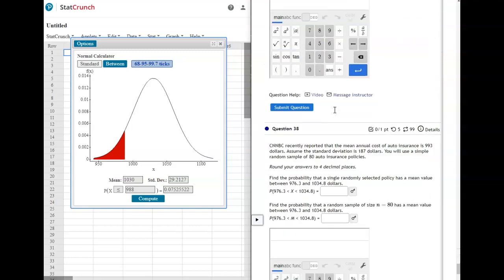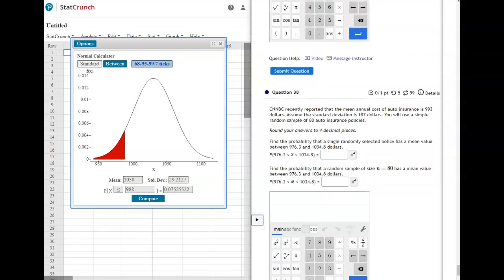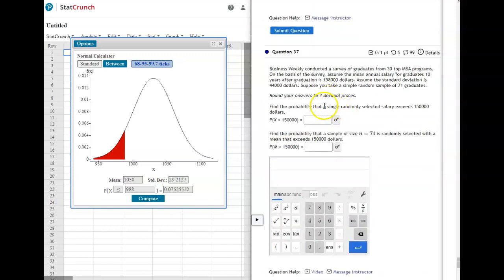37 and 38 are exactly the same. The first one's talking for a single and then the second one is asking for the entire sample size. So the only thing that changes is your standard deviation.